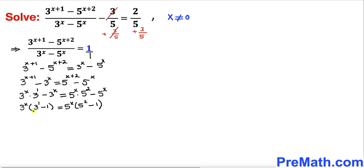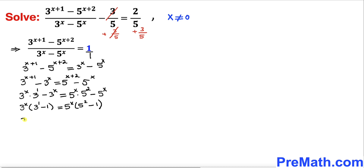Now let's focus inside the parentheses. 3^1 - 1 = 3 - 1 = 2 on the left hand side. On the right hand side, 5^2 - 1 = 25 - 1 = 24. So the equation becomes 3^x · 2 = 5^x · 24.